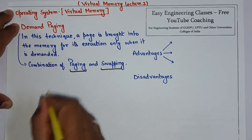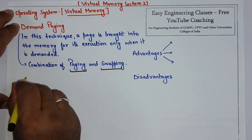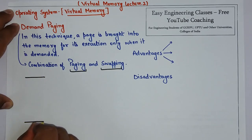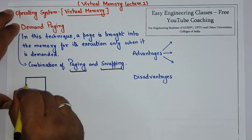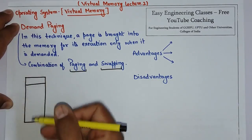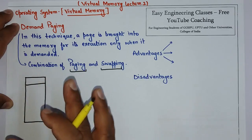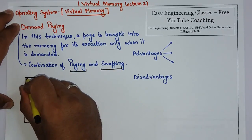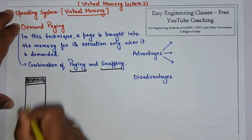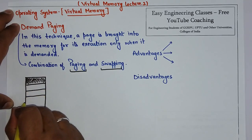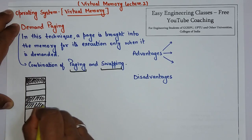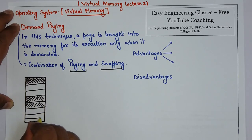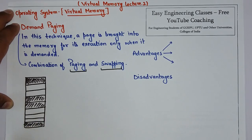Now let's see with the help of a diagram how it is implemented. Suppose this is your main memory. The main memory is divided into a number of frames, and each frame can hold a page. The process is divided into a number of pages. So this is the main memory, and we can have different frames in it.